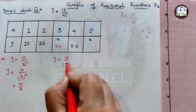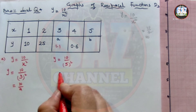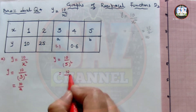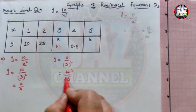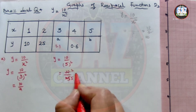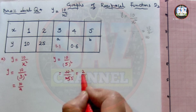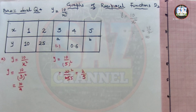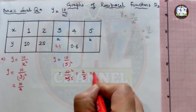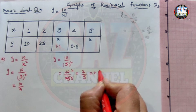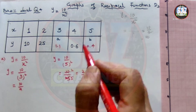For x = 5, the calculation is y = 10/5² = 10/25, which simplifies to 2/5, and 2/5 = 0.4. So the missing value for x = 5 is 0.4. Replace that value in the table. The table is now complete.